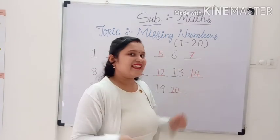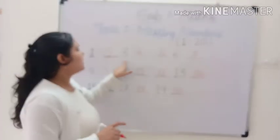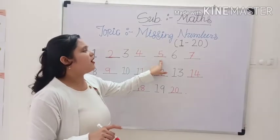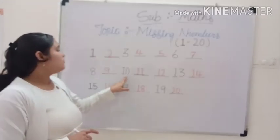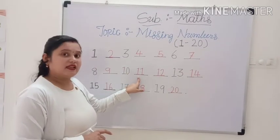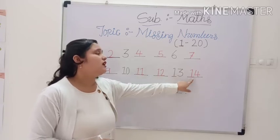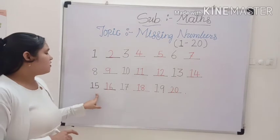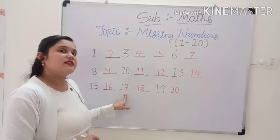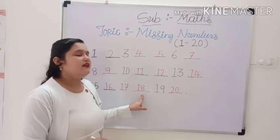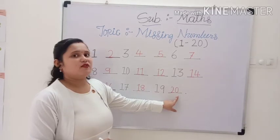We did it. Now, 1, 2, 3, 4, 5, 6, 7, 8, 9, 10, 11, 12, 13, 14, 15, 16, 17, 18, 19, 20.